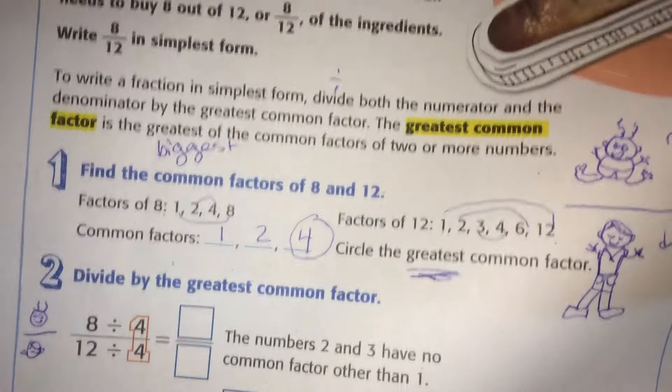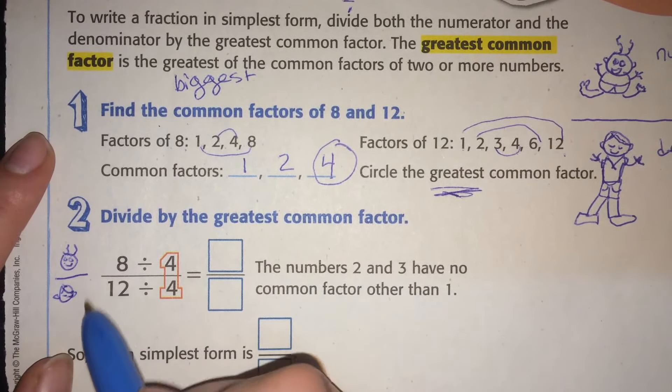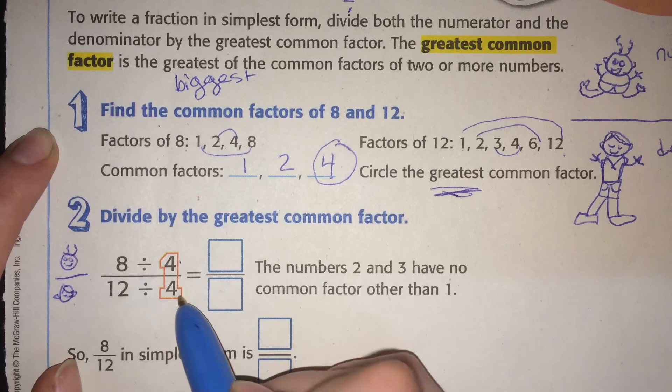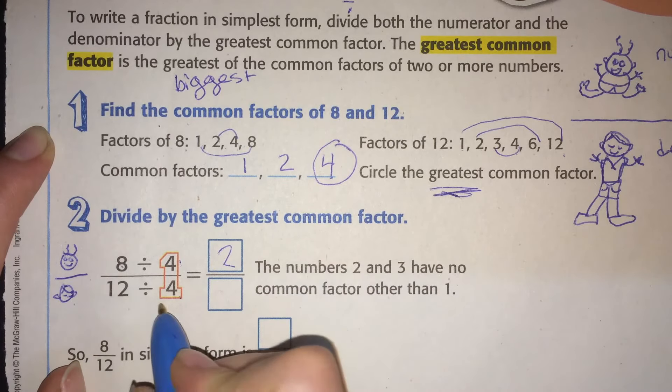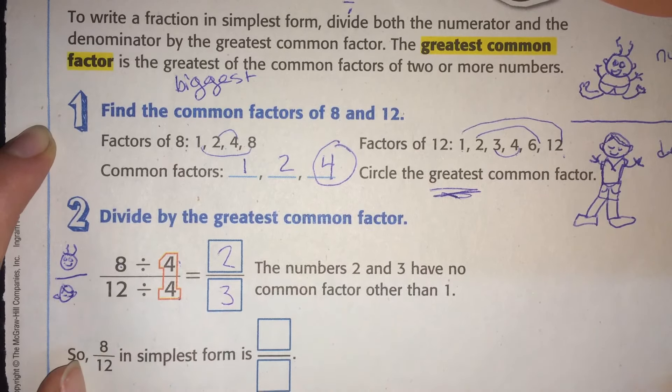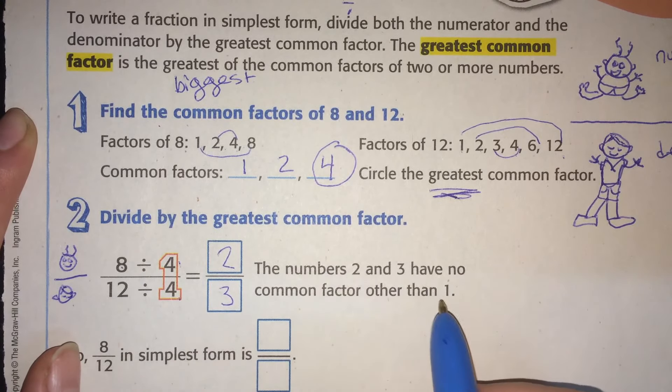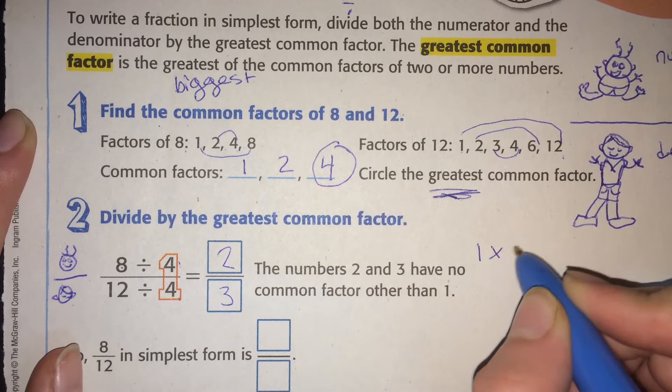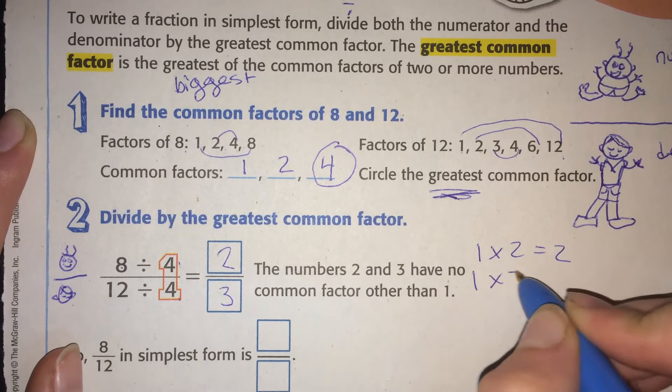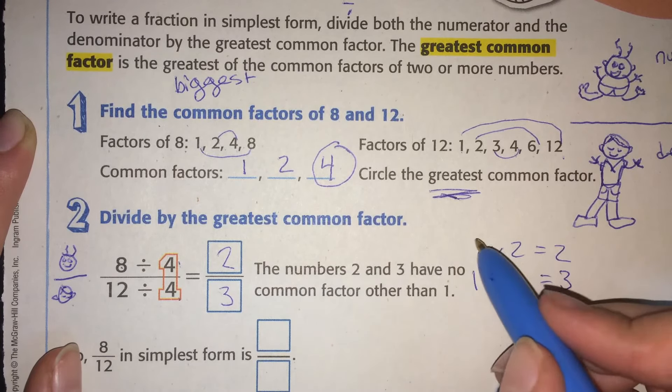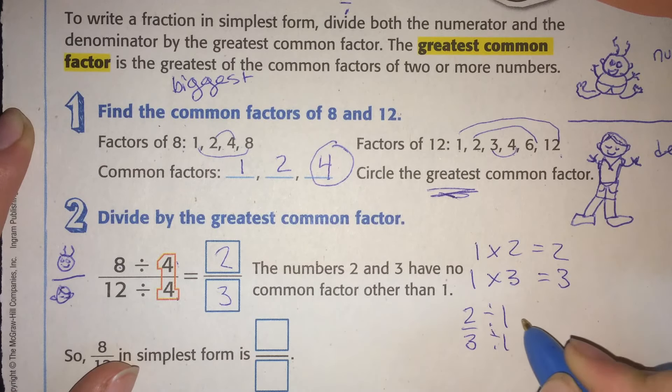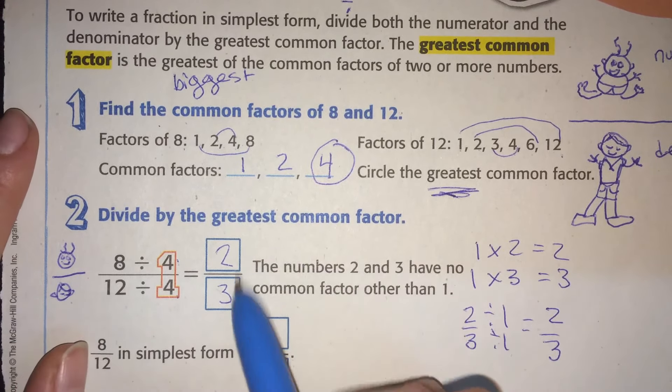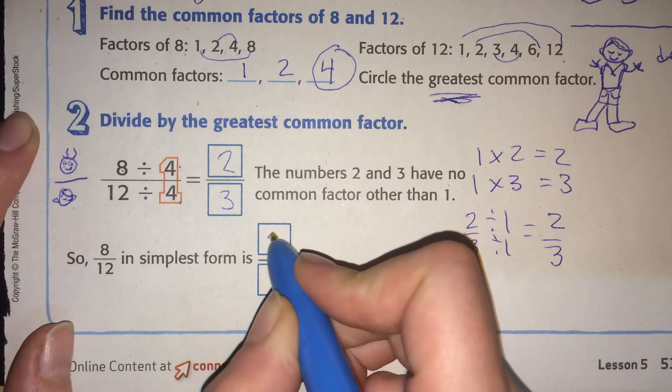So now we're going to divide by the greatest common factor. So the little brother and the big brother, we have to divide by the same number or else it's not fair. So 8 divided by 4 is 2. 12 divided by 4 is 3. The numbers 2 and 3 have no common factor other than 1, right? Because the only way to get 2 is 1 times 2 equals 2, and 1 times 3 equals 3. There's nothing else. There's no point in dividing by 1. It'll just end up being the same. So this is now in simplest form. So 8 twelfths in simplest form is 2 thirds.